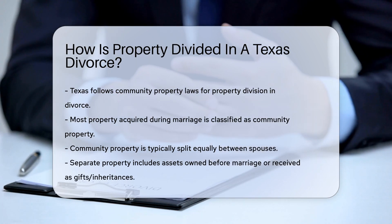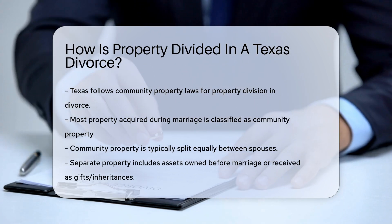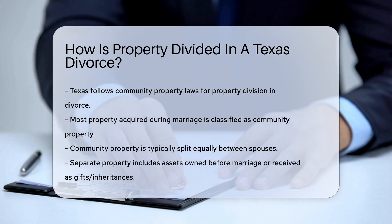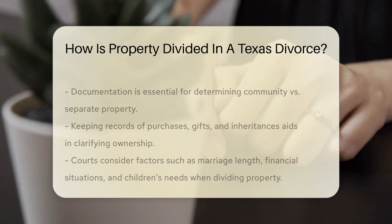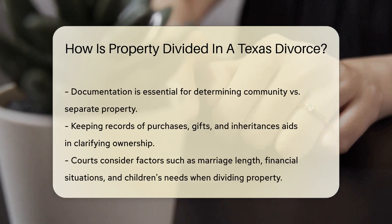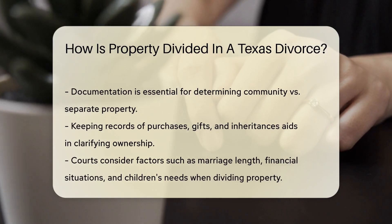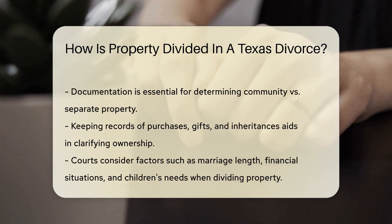Community property is generally split equally between spouses. However, separate property — which includes assets owned before the marriage or received as gifts or inheritances — is not divided.